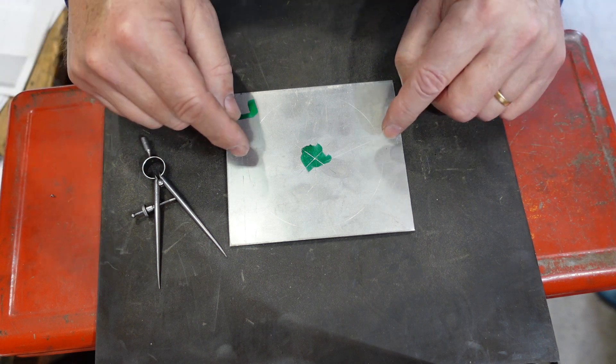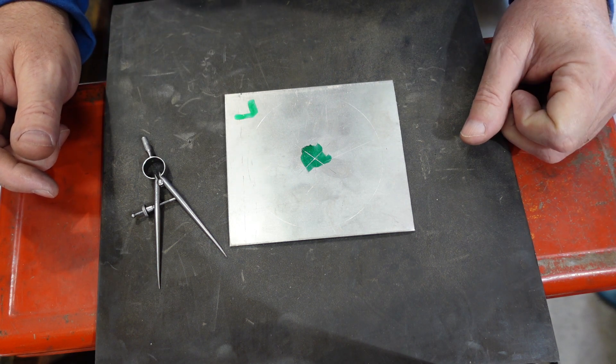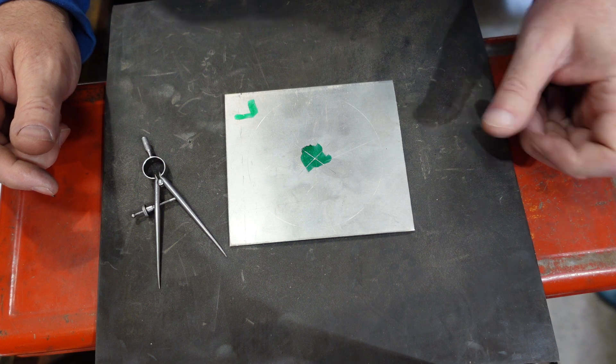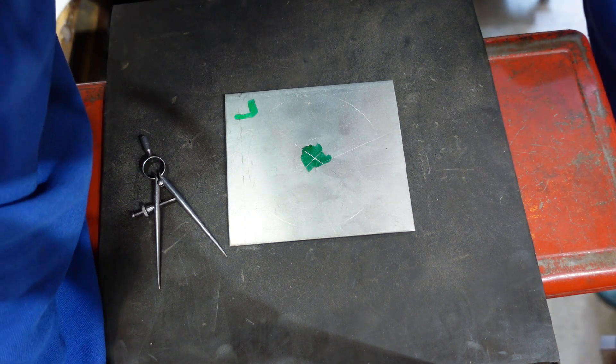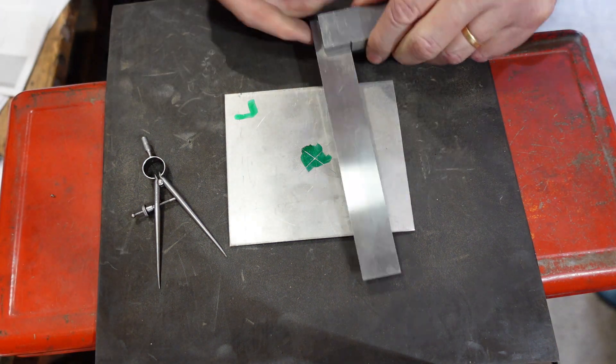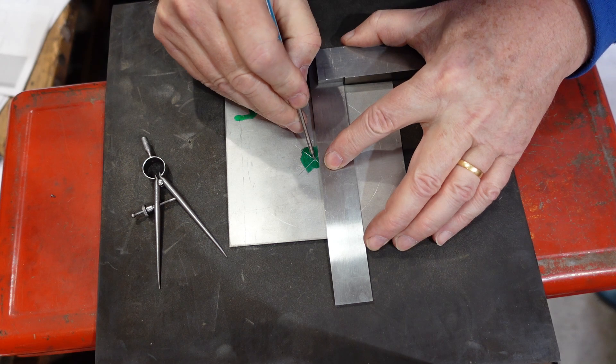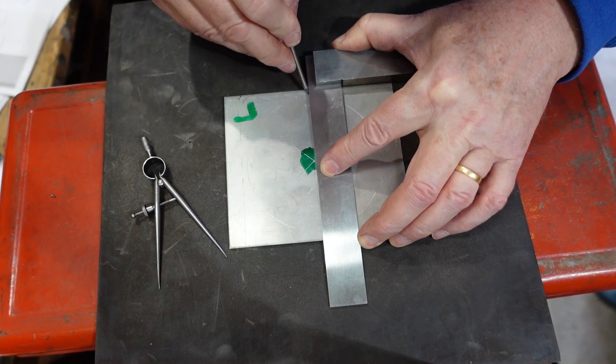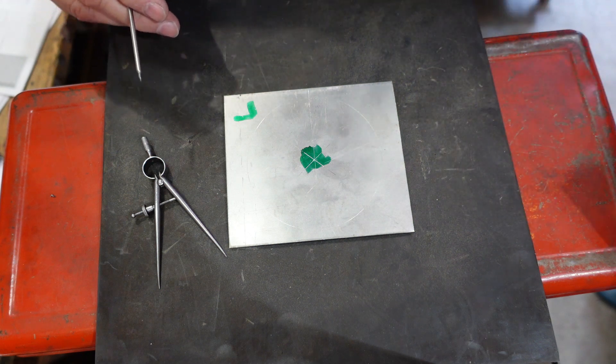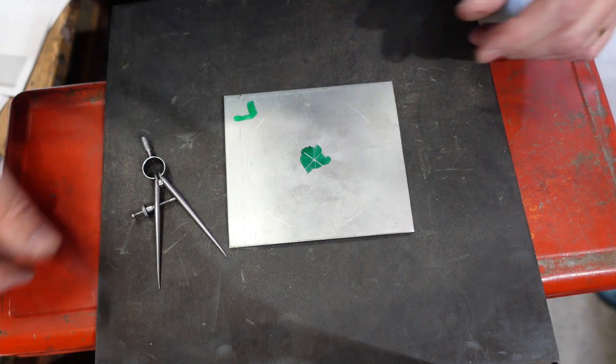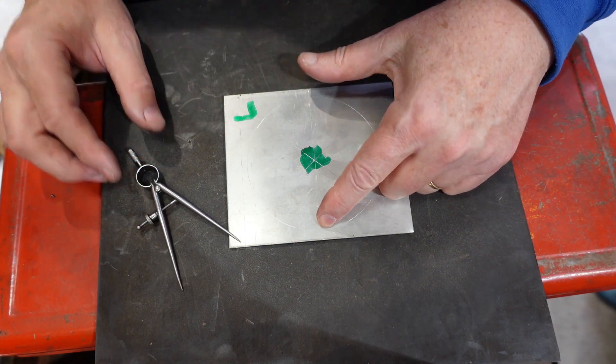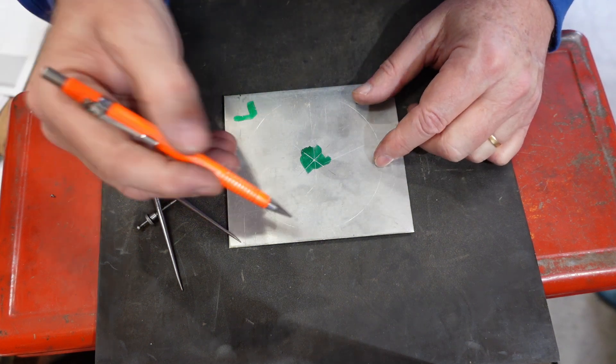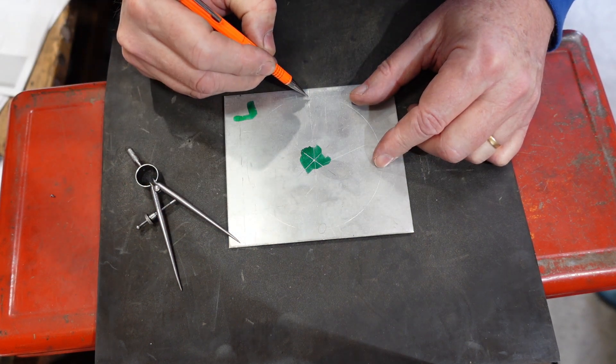What can we do with that? Well the next thing that we can do is subdivide that. Now that's easy enough to do because if I grab my square, I can put that there and scribe a line. So I've now got this divided into two points, there's one there and one there.